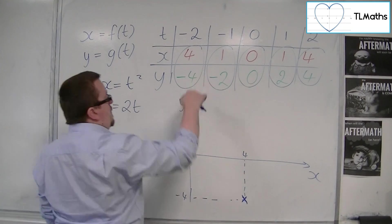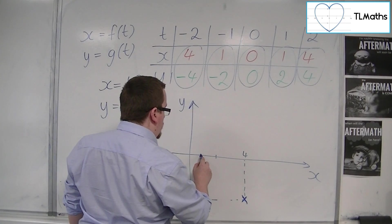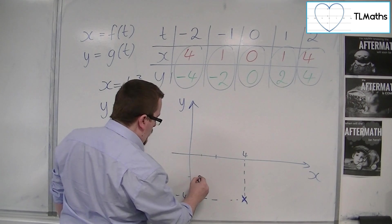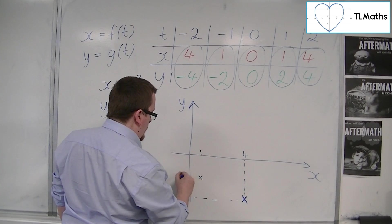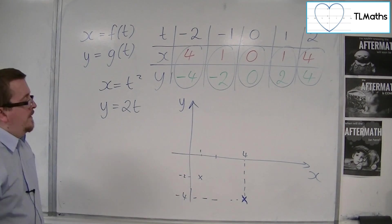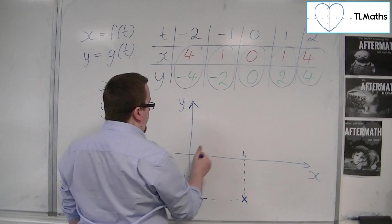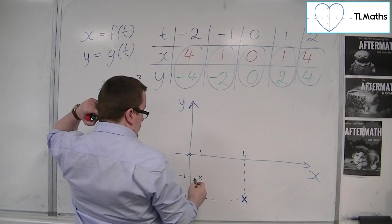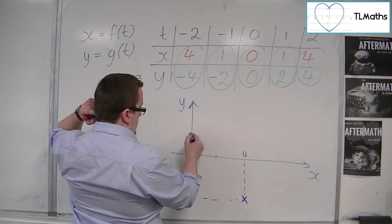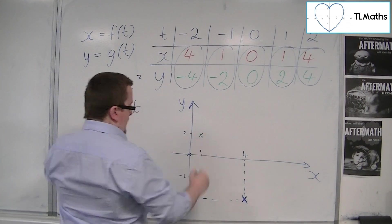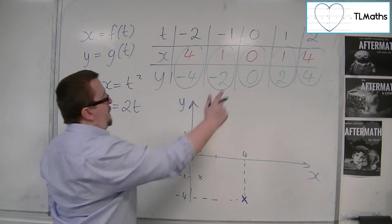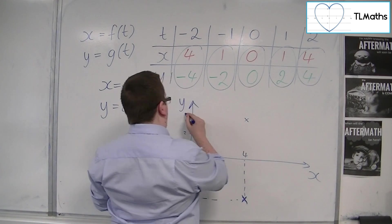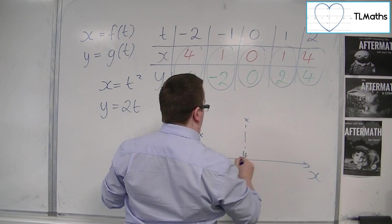Then I've got 1 minus 2, so let's be somewhat accurate about this. So 1 and halfway can be about there, so 1 minus 2, so that could be there. Then I've got 0, 0, so that point there. Then I've got 1, 2, so let's try and get this relatively even. So 1, 2, so that would be there. And 4, 4, so somewhere around about there for 4, 4. So here are my 5 points.